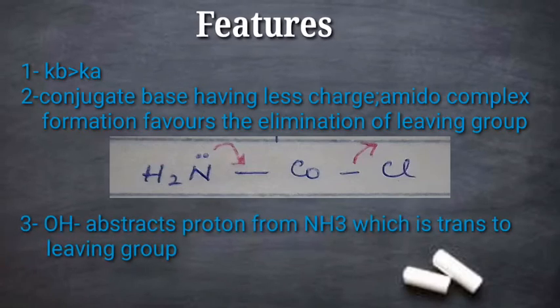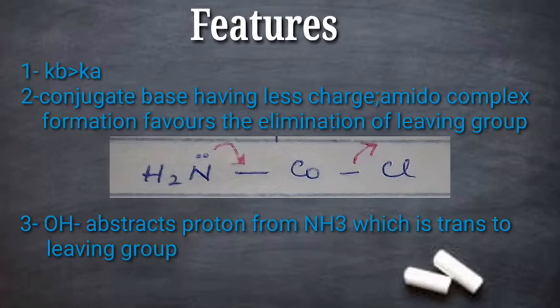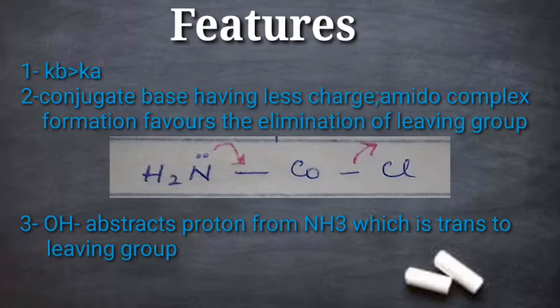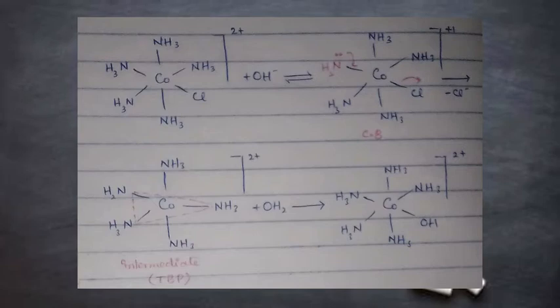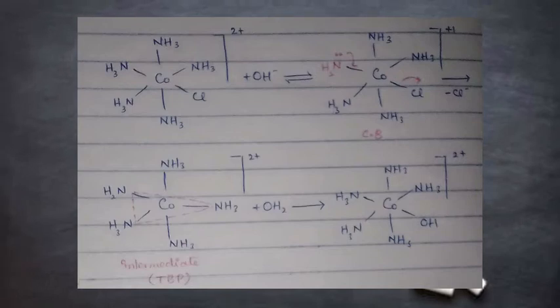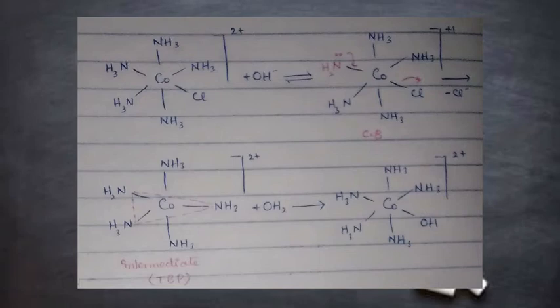Feature 3: the hydroxyl ion, acting as a nucleophile, abstracts a proton from the ammonia ligand that is in the trans position to the leaving group. Looking at the stereochemistry: in step 1, OH⁻ abstracts H from the NH₂ that is trans to the leaving group; in step 2, the conjugate base undergoes removal of the leaving group to form a trigonal bipyramidal intermediate; then in step 3, protonation restores the octahedral complex.